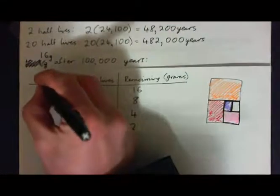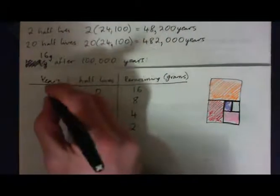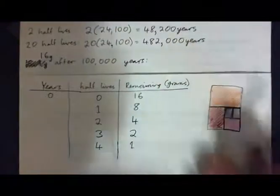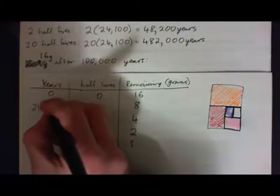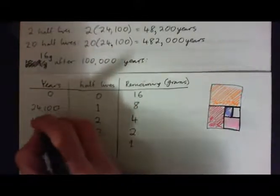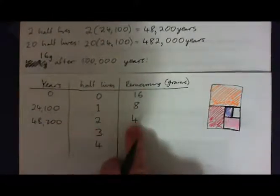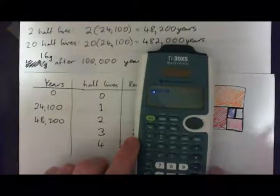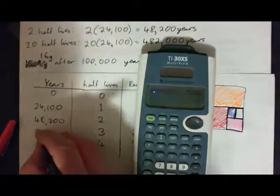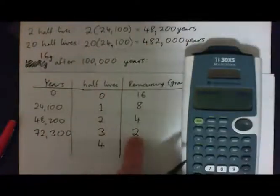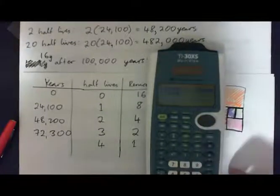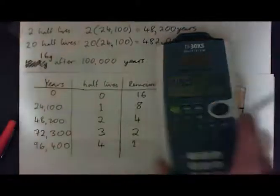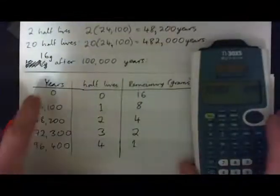If we look at the years, just to get an idea of what's going on: initially after no years, we have 16 grams. After one half-life, which is 24,100 years, we have 8 grams left. After two half-lives, or 48,200 years, we have 4 grams left. Multiplied by 3, that's 72,300 years, three half-lives, you have 2 grams left. Multiplied by 4, that's 96,400 years, we have 1 gram left. So the question is: how do you convert from years to amount remaining?